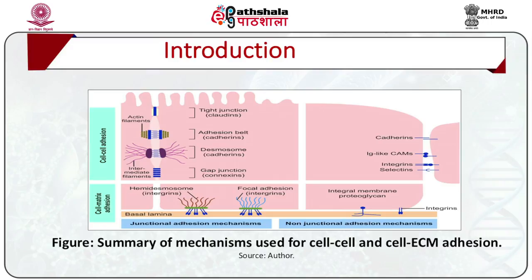A few proteins like integrins and cadherins can be involved in both non-junctional and junctional cell-cell and cell-matrix contacts. The cadherins, integrins and selectins act as transmembrane adhesion molecules and depend on extracellular divalent cations to function. For this reason, most cell-cell and cell-matrix contacts are divalent cation dependent.